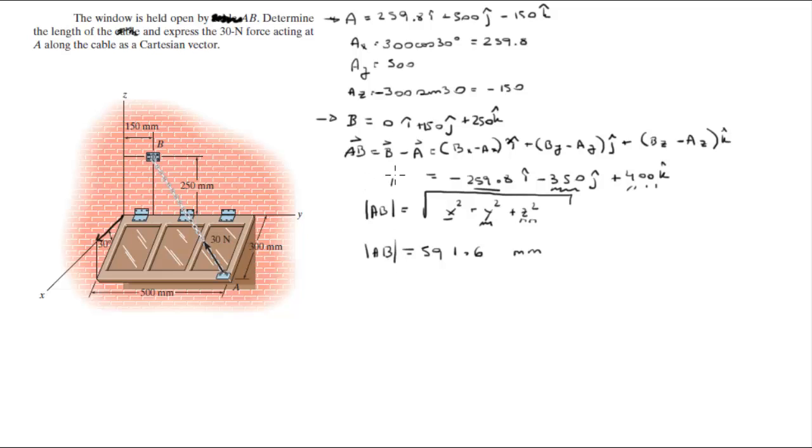When you do, you're going to get that the magnitude is equal to 591.6 millimeters. This is the magnitude. This is vector AB. And now you can easily find the unit vector AB by dividing the vector by its magnitude.